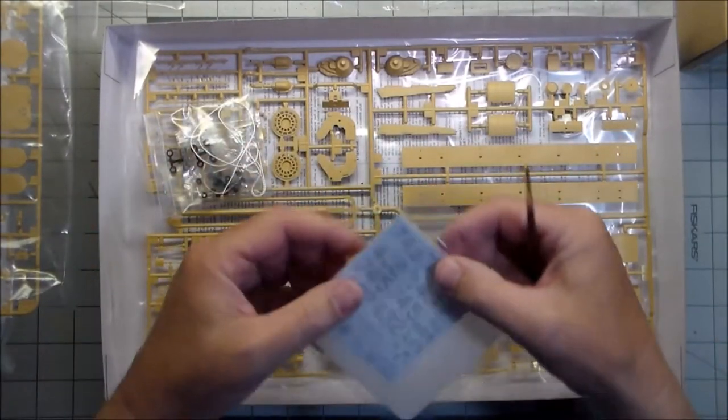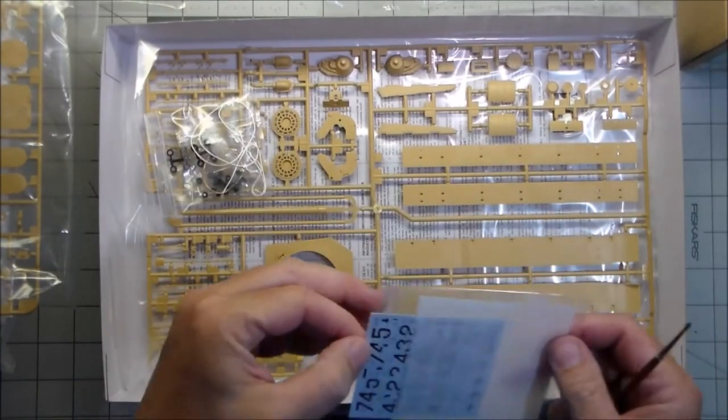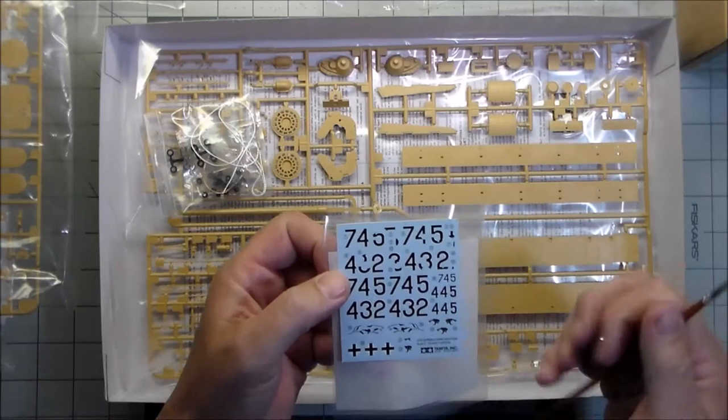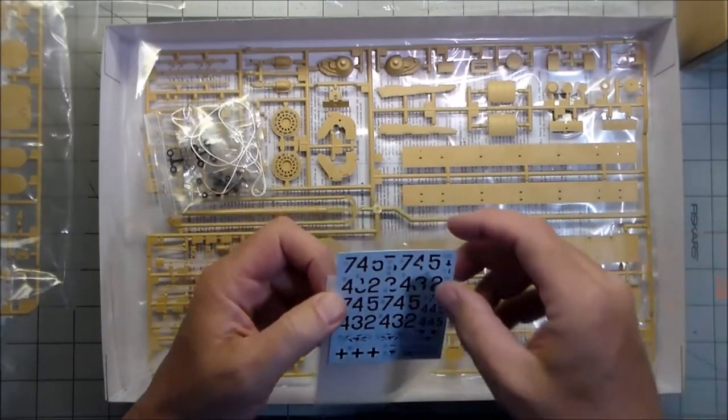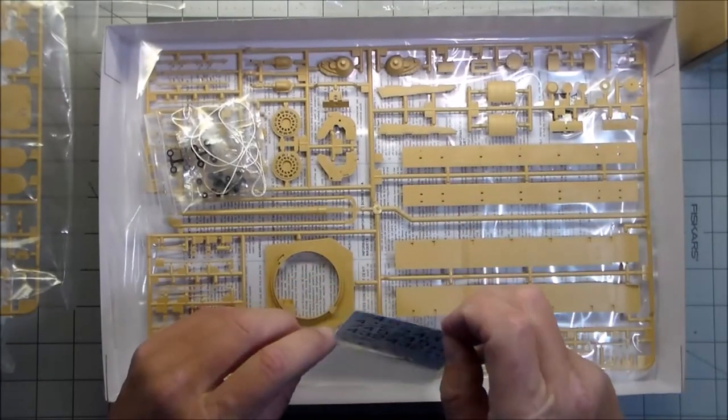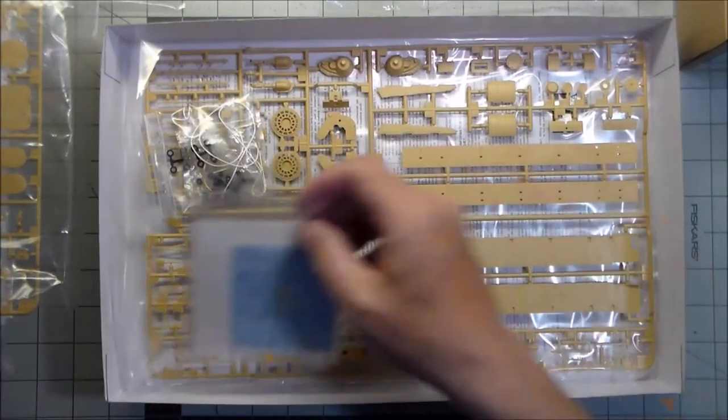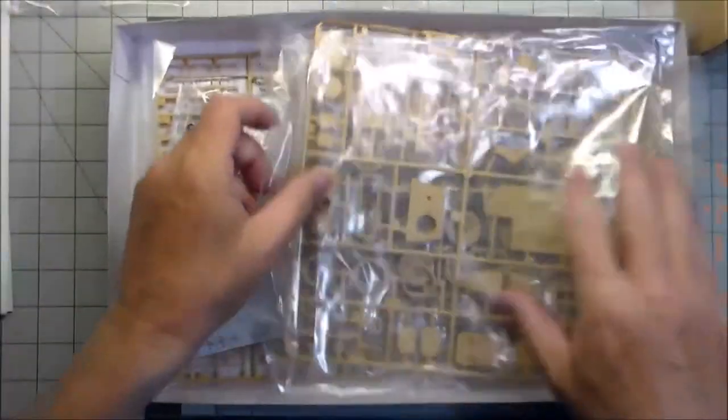Now what else comes with the kit - you've got a bundle of wire here, not sure what that's for, I'll find out. Rope, some string for the tow rope, and then the poly caps for the wheels and that whole part I was talking about. We've got the decals.